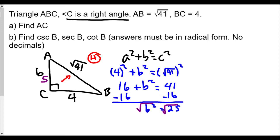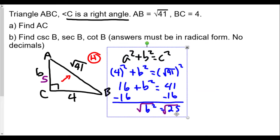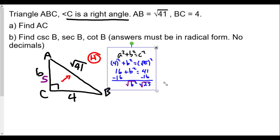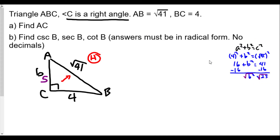We've found our missing side. I'm going to make our work a little smaller and keep it on screen for reference. Now we talk about cosecant. Cosecant of B — here's angle B we're focusing on. This leg is opposite angle B, and this leg is adjacent to angle B.